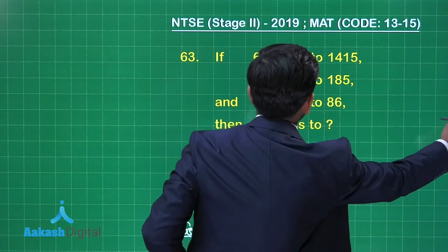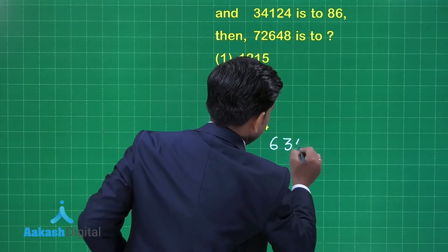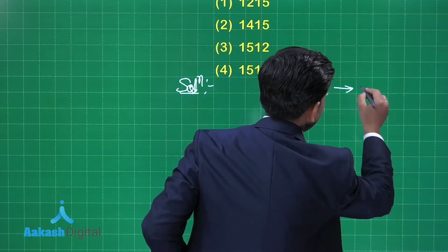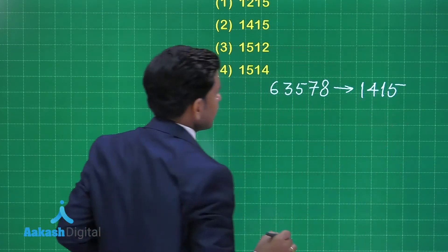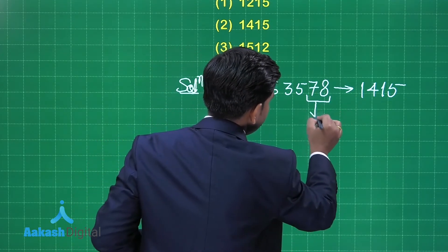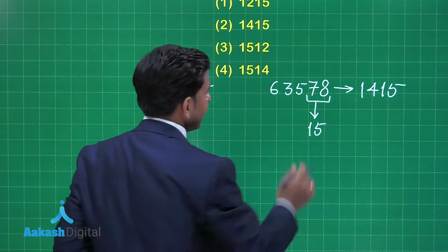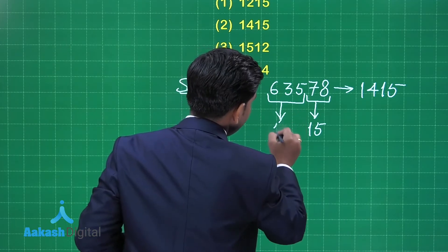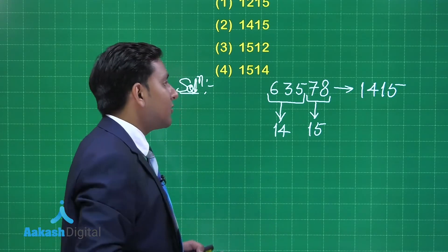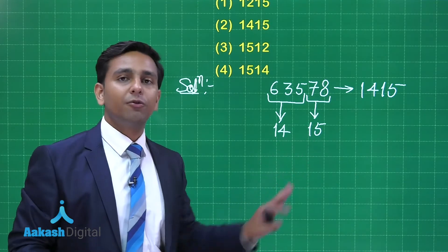Starting with the very first number, 63,578, this is written as 1415. When we focus on the last two digits, the sum of 7 and 8 is 15, and the sum of the remaining three digits 6, 3, and 5 is equal to 14. So the code for 63,578 is 1415.